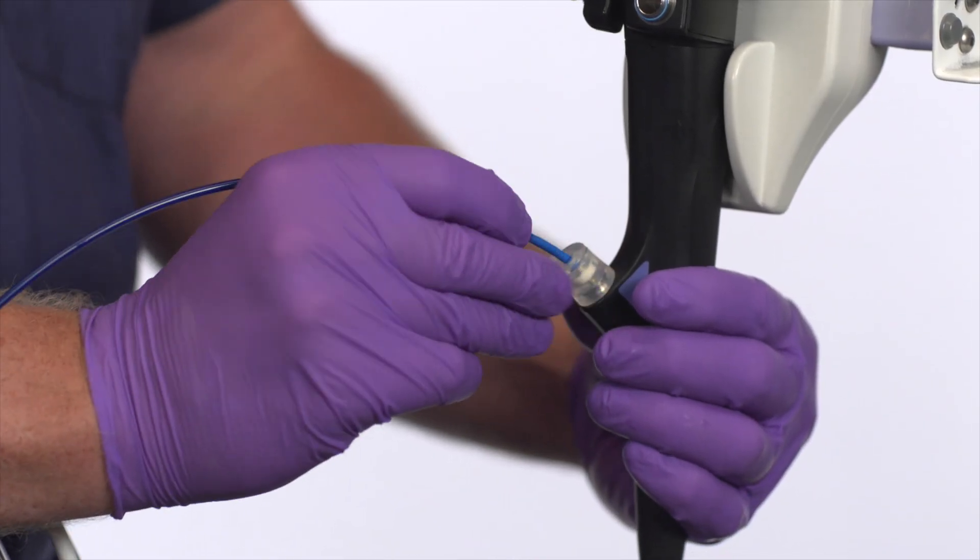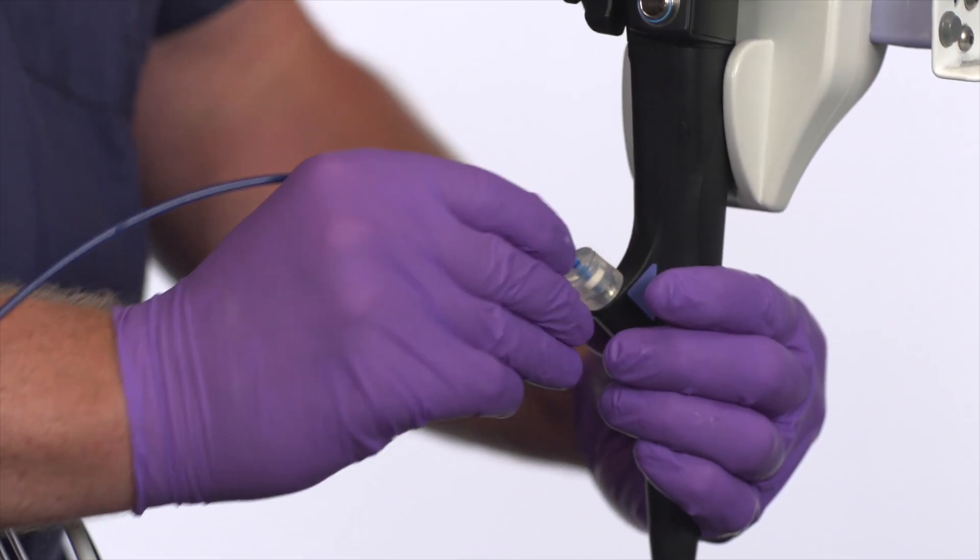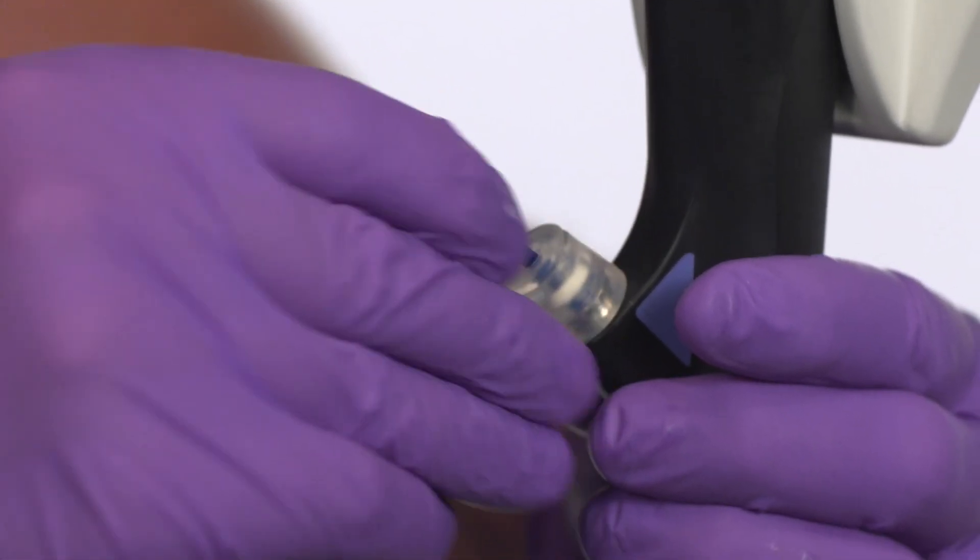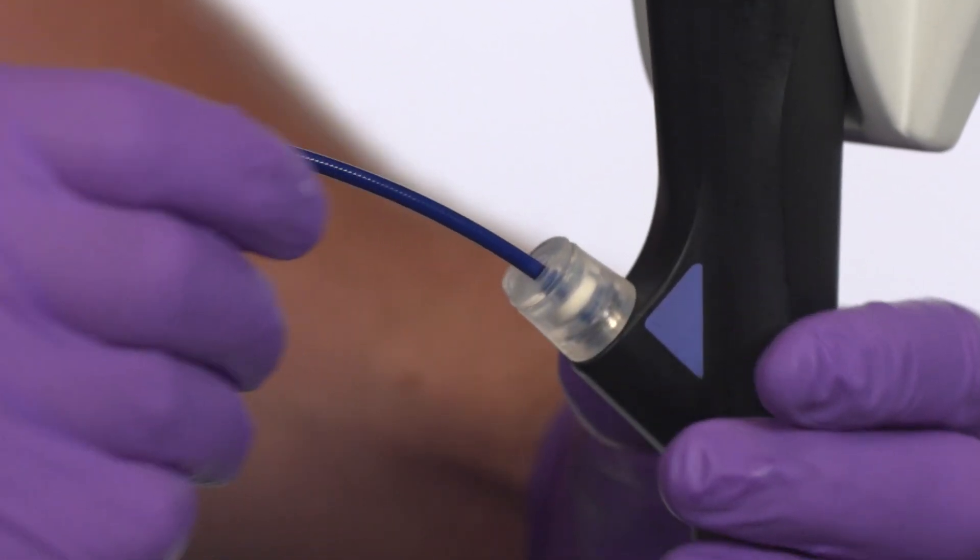If using a non-guide wire approach, insert the distal end of the Spyscope DS catheter into the working channel of a duodenoscope using short strokes, 2 to 3 centimeters.